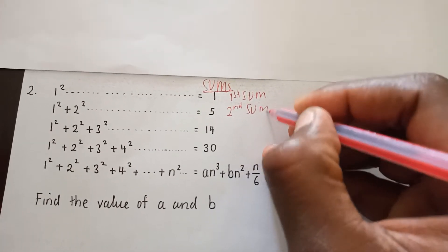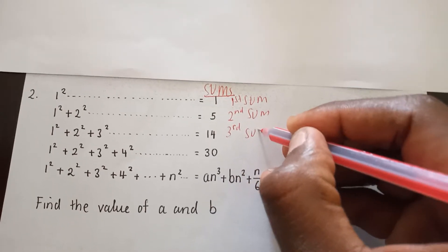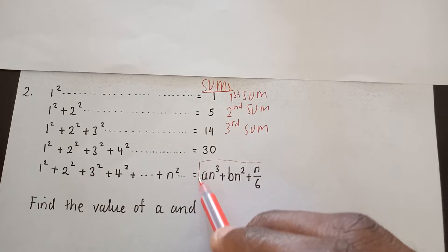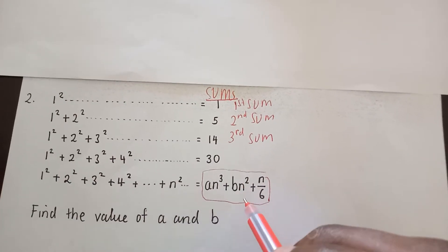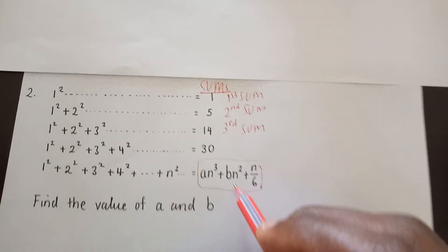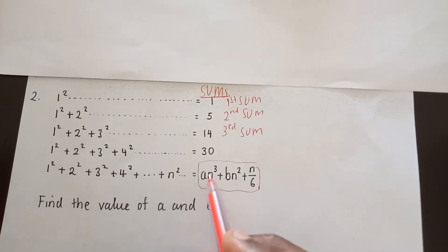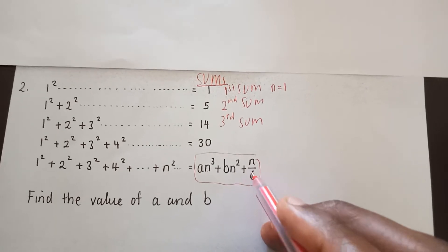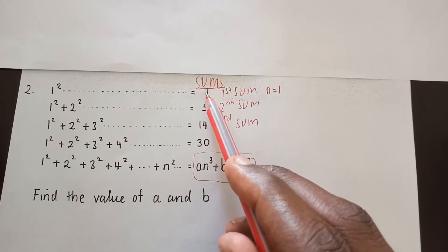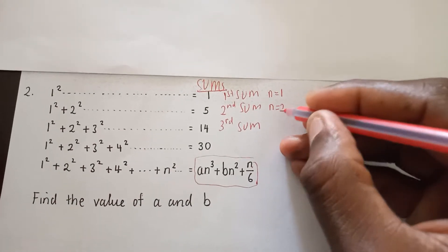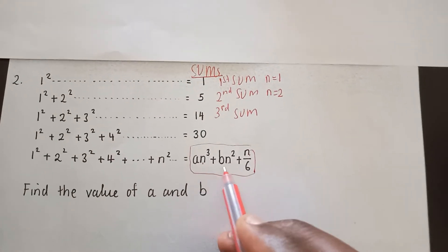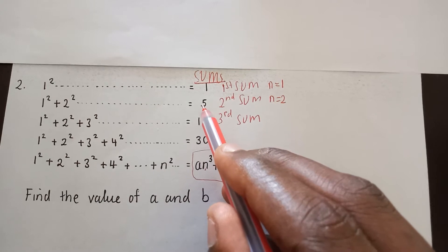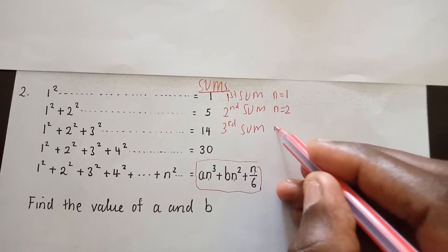So this will be our first sum, this will be our second sum, and they continue like that. Here we have the nth sum, meaning this is the formula for any sum we would want to get. If this is the formula, it means if I plug n as one, I will get the first sum. If I plug n as two, I will get the sum as five, and it continues like that.